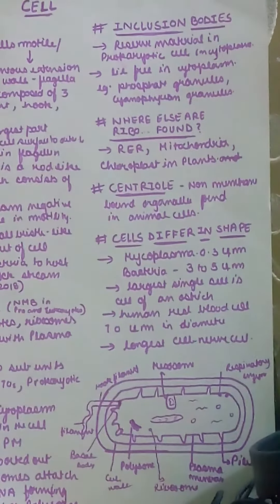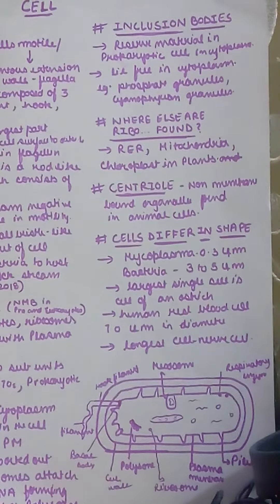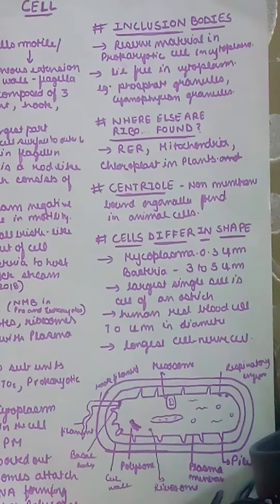Ribosomes are found in the cytoplasm and also in the membrane. When ribosomes are in the cytoplasm, the proteins produced stay within the cell. When ribosomes are in the membrane, the proteins are also in the membrane and can go out of the cell.